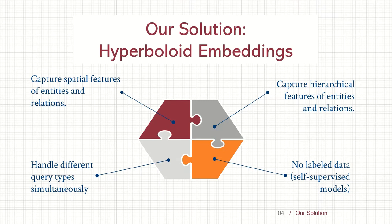To alleviate the challenges of previous approaches, we propose hyperboloid embeddings with a focus on solving the given challenges. We need the representations to improve querying over knowledge graphs, and the representations need to capture both hierarchical and spatial information. Also, we need to define logical operations such that we can use the geometries to learn our representations. Additionally, given the large scale of naturally collected knowledge graph datasets, we would prefer to develop a self-supervised approach and use unlabeled knowledge graphs towards learning representations.